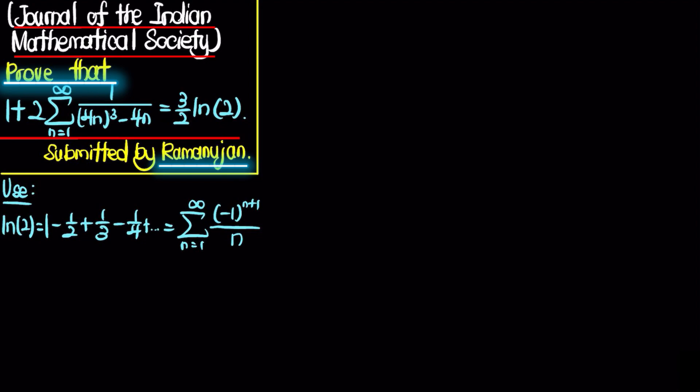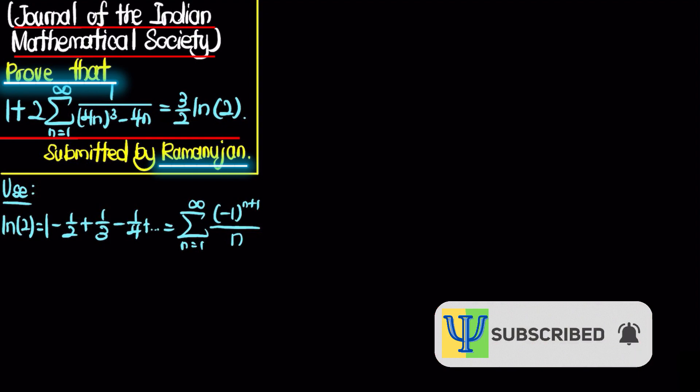Today we will be evaluating a series from the Journal of the Indian Mathematical Society. We will prove that 1 plus 2 times the sum from n equals 1 to infinity of 1 over (4n³ minus 4n) is equal to 3/2 times the natural log of 2. This problem was submitted by Ramanujan, the famous Indian mathematician, and it is the first series submitted by him. I will present two solutions: the first without integrals, and the second using integrals.